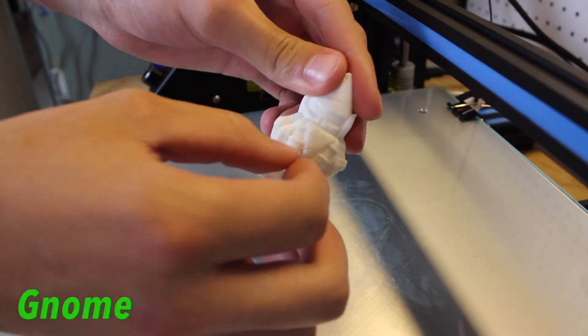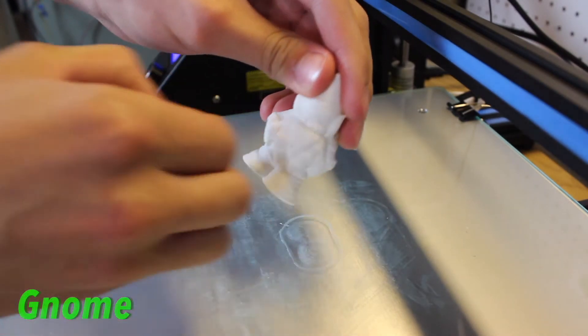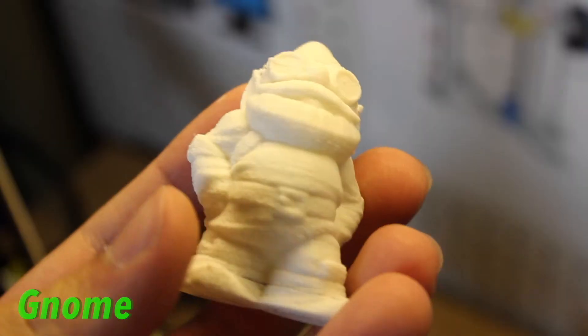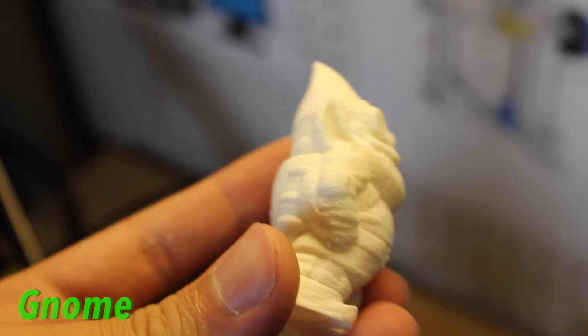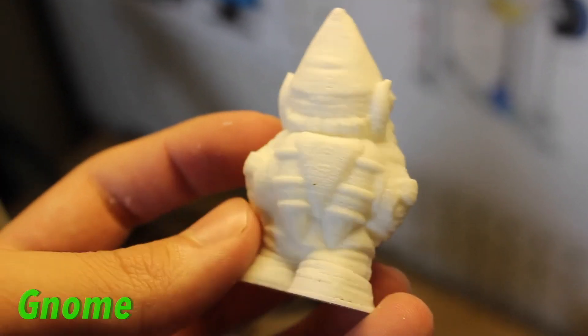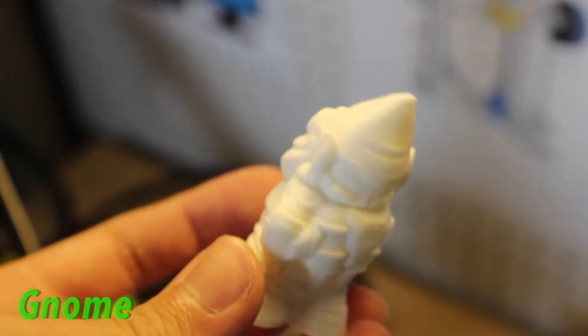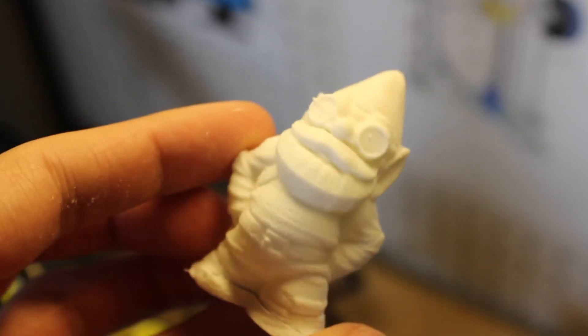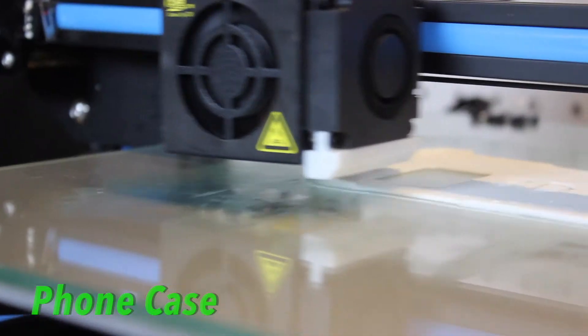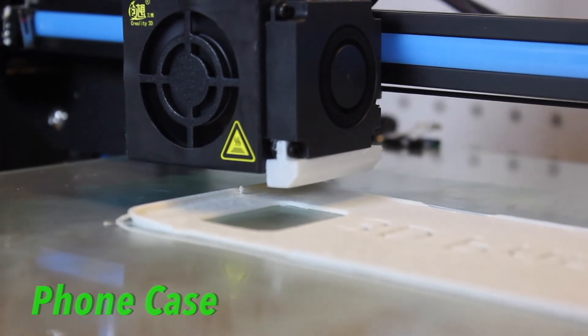So moving on to the Flex Mark 9 flexible TPU filament. I printed a small gnome first with my CR-10 and this turned out fantastic. Super stretchy, high detail, and also a really crisp white color.